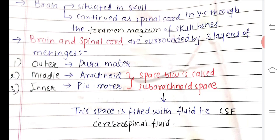The brain and spinal cord are surrounded by three membranes or three layers. From outer to inner: the outer layer is dura mater, the middle is arachnoid, and the inner is pia mater. There is a space between the arachnoid and pia mater known as the subarachnoid space, which contains a fluid called cerebrospinal fluid.